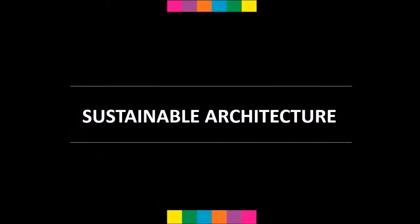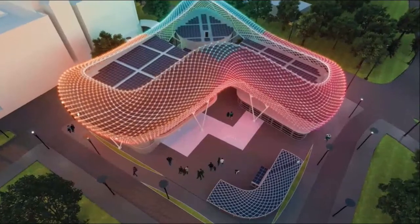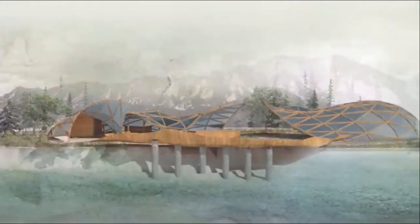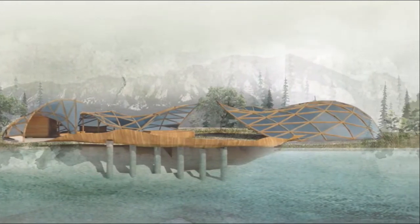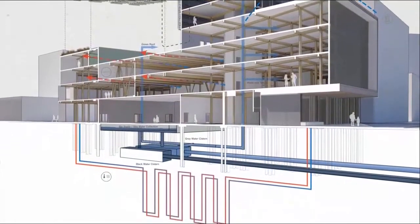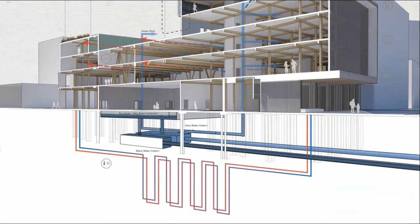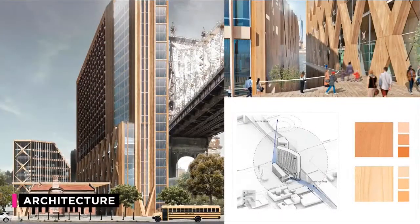Sustainable architecture is another upcoming field for architecture students. SCAD features a groundbreaking integrated path to architectural licensure — an accelerated academic track that prepares students to become licensed architects in as few as seven years, compared to programs that may take up to 15 years. As a student, you get hands-on experience bringing your ideas to reality.